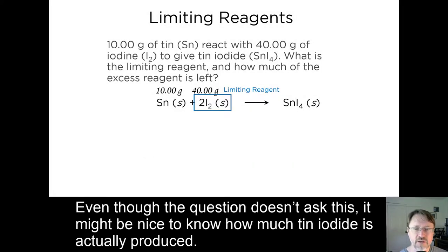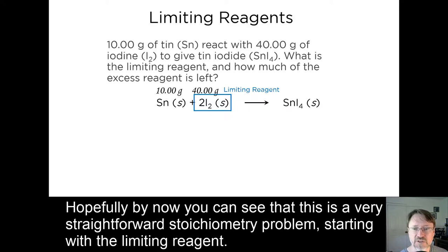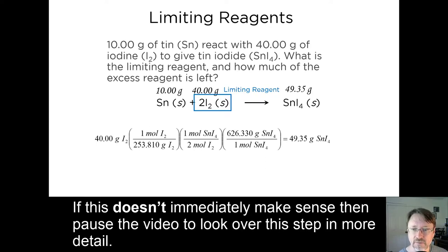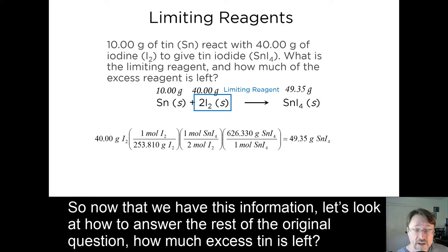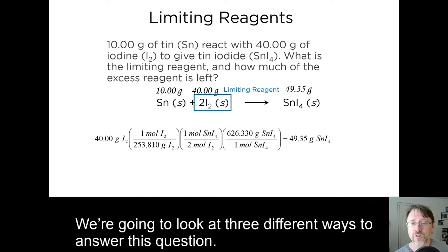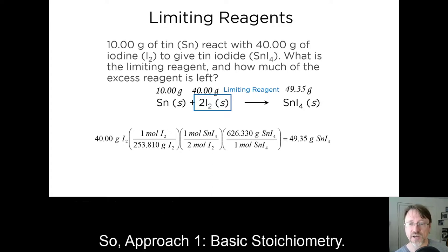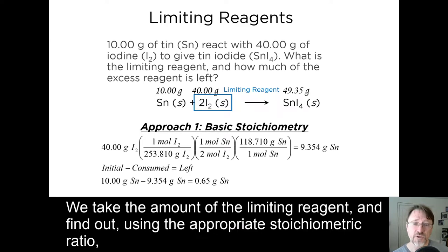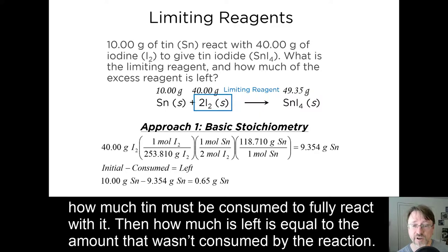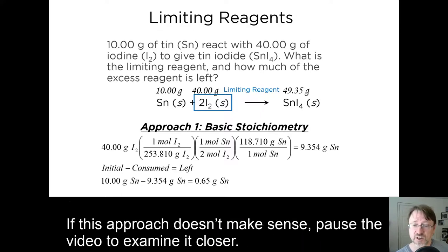Okay, so let's keep going with the problem. Even though the question doesn't ask this, it might be nice to know how much tin iodide is actually produced. Hopefully by now you can see that this is a very straightforward stoichiometry problem, starting with the limiting reagent. If this doesn't immediately make sense to you, then please pause the video to look over this step in more detail. So now that we have this information, let's look at how to answer the rest of the original question. How much excess tin is left? We're going to look at this in three different ways to answer this question. All of them work fine, and all of them come from understanding the relationship between the quantities. So approach one, basic stoichiometry. We take the amount of limiting reagent and find out, using the stoichiometric ratio, how much tin must be consumed to fully react with it. Then how much is left is equal to the amount that wasn't consumed by the reaction. If this approach doesn't make sense, pause the video to examine closer.